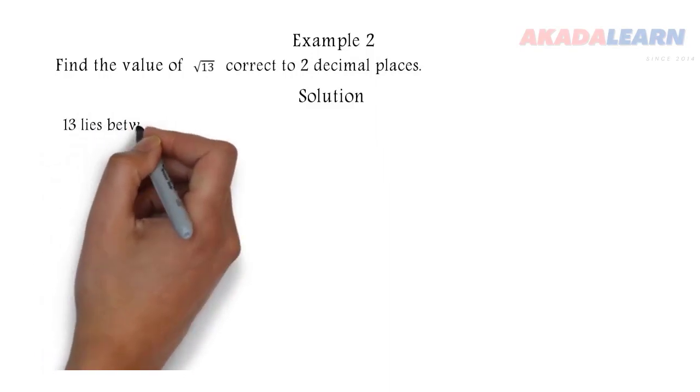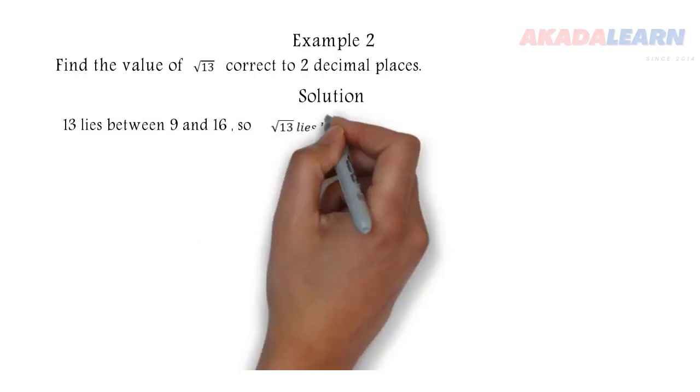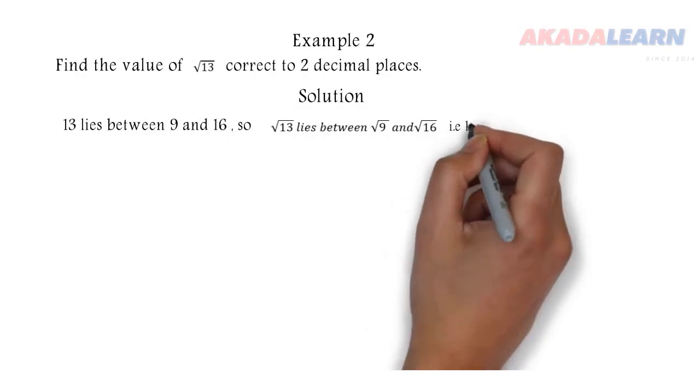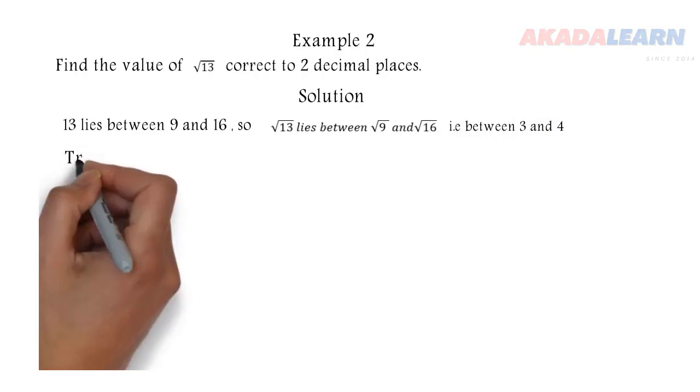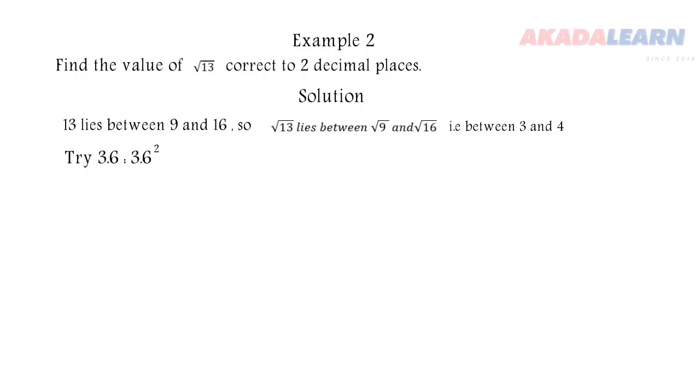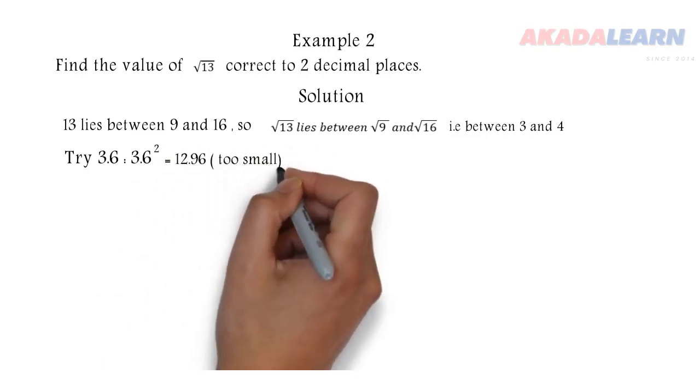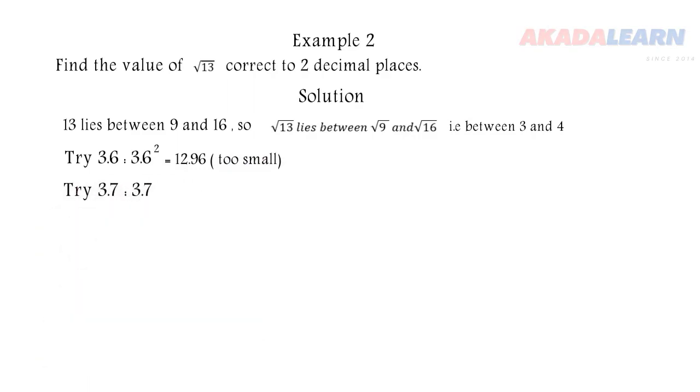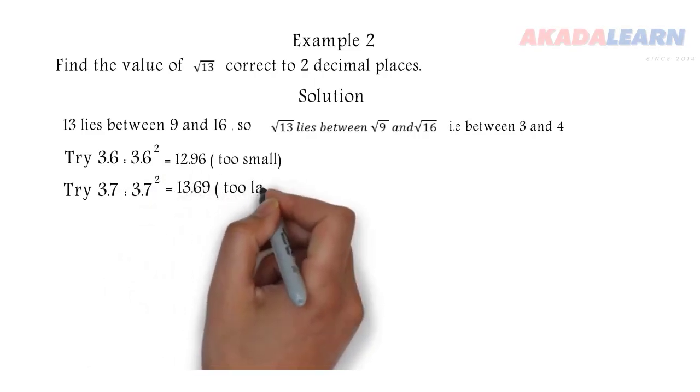So 13 is not a perfect square, but 13 lies in between two perfect squares, which are 9 and 16. So the square root of 9 is 3, square root of 16 is 4. So first we will try 3.6. We square 3.6 and we got 12.96. This is too small. Now again let's increase, so we try 3.7. We square it and we get 13.69, and this is too large.